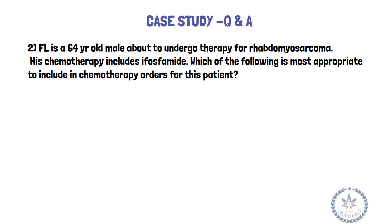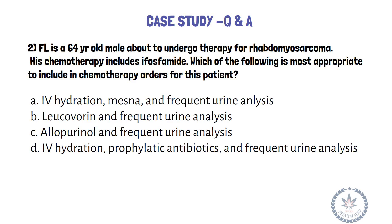Case Study 2. FL is a 64-year-old male about to undergo therapy for rhabdomyosarcoma. His chemotherapy includes ifosfamide. Which of the following is most appropriate to include in chemotherapy orders for this patient? The options are: A. IV hydration, mesna, and frequent urinalysis; B. Leucovorin and frequent urinalysis; C. Allopurinol and frequent urinalysis; D. IV hydration, prophylactic antibiotics, and frequent urinalysis.